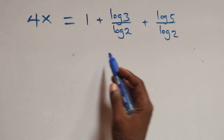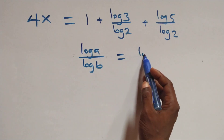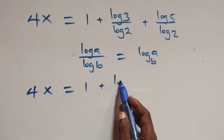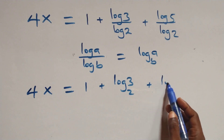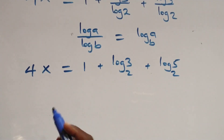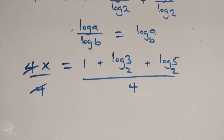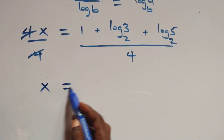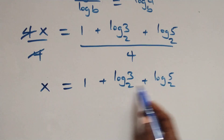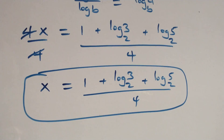Next step here, we apply the change of base formula. When we have log a over log b, this is the same thing as log a to base b. Applying this, we have 4x equals to 1 plus log 3 to base 2 plus log 5 to base 2. Next step, we divide both sides by 4 — 4 cancels each other — and we have x equals to 1 plus log 3 base 2 plus log 5 base 2, all over 4.